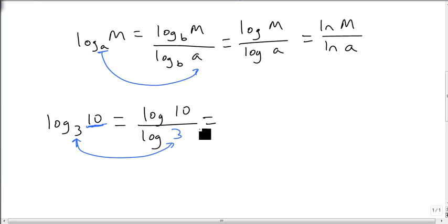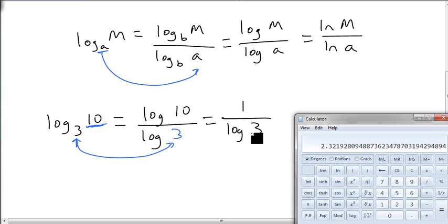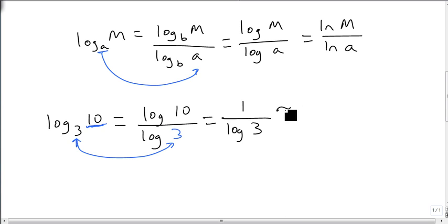I don't even need a calculator to know that the log of 10 is 1, because what do I raise 10 to to get 10? 1. Over log 3. Then I can bring my calculator back up, and I can do 1 divided by the log of 3, and it's 2.0959.